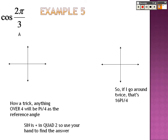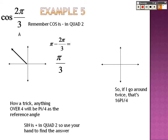For cosine of 2pi over 3, the reference angle is just pi over 3. You can find it by knowing it's in quadrant 2, so it's pi minus 2pi over 3, which leaves pi over 3. Pi over 3 is the pointer finger. Cosine is everything to the right — that's 1 finger, so square root of 1 over 2 is 1 over 2. But in quadrant 2, cosine is negative, so the answer is negative 1 over 2.